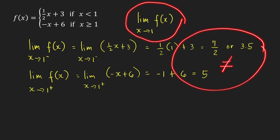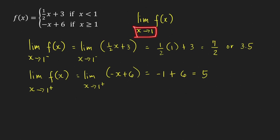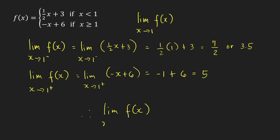Because the one-sided limits are not equal, we conclude that the two-sided limit does not exist. Keep in mind that the two-sided limit exists only when the function values approach a single number as x gets closer and closer to 1. In this case, the limit of f of x as x approaches 1 does not exist — we write it as DNE.